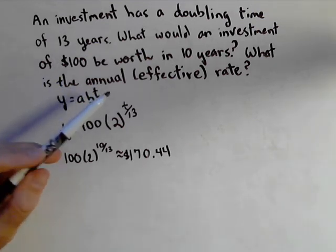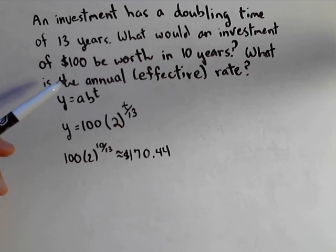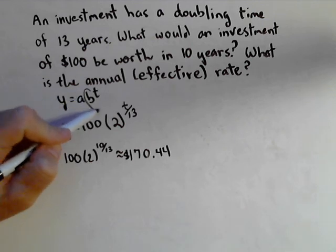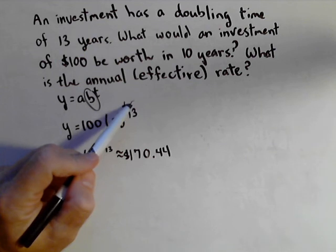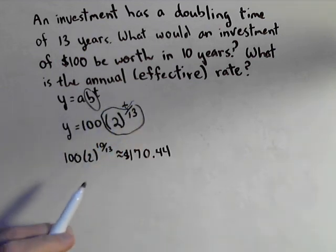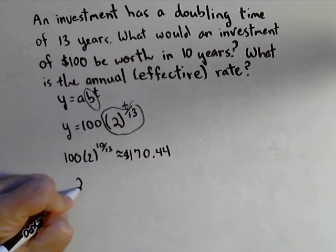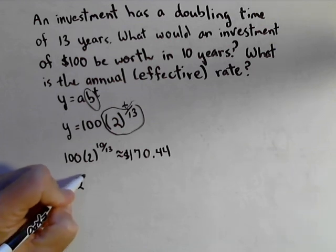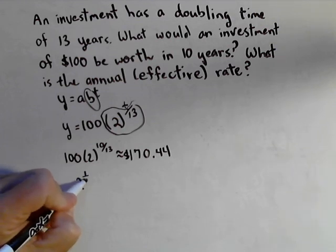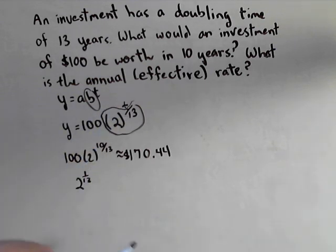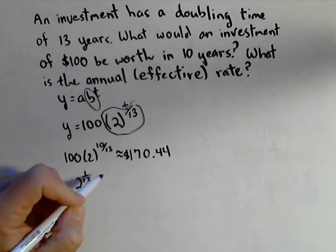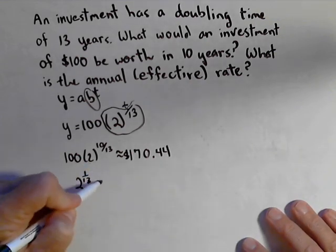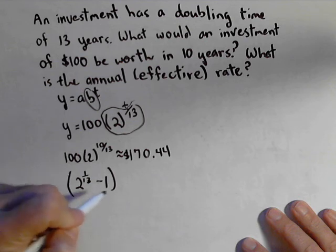Now, the annual yield, or effective yield, or the annual rate, is what percentage we're gaining each year. To find that, what you need is the base of your exponential. The base is what's being raised to the exponent. So for us, it's actually that two to the one over 13. It's not just the two, because it's not doubling every year. It's two to the one over 13. So basically, we just remove the t. Now what we're gonna do with that, that's our base. And all you gotta do with your base to get your rate, is subtract one and multiply by 100%.